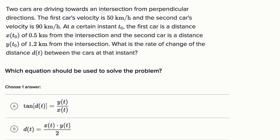Two cars are driving towards an intersection from perpendicular directions. The first car's velocity is 50 kilometers per hour, and the second car's velocity is 90 kilometers per hour. At a certain instant t₀,